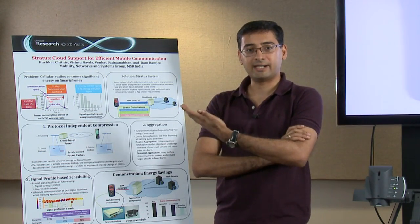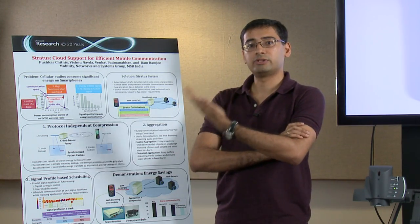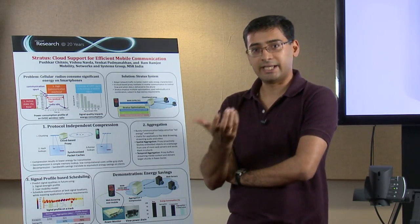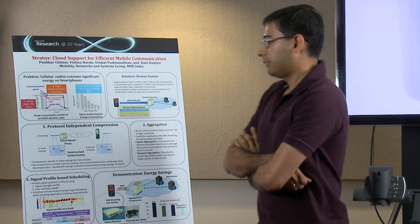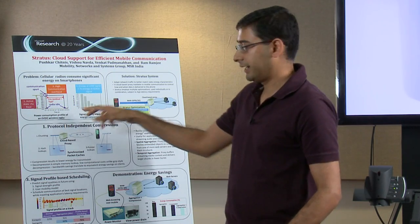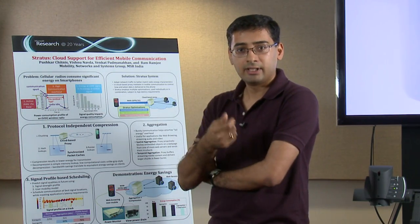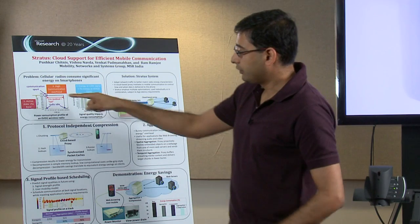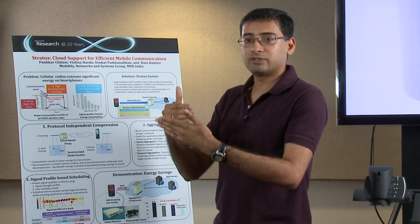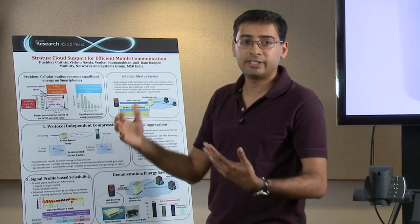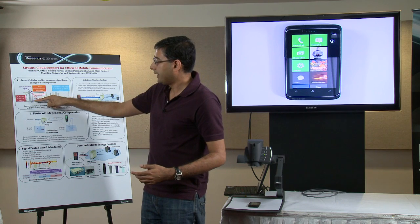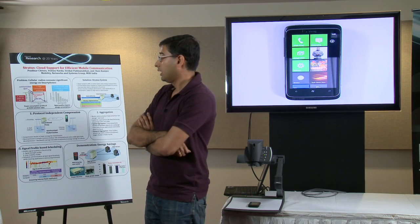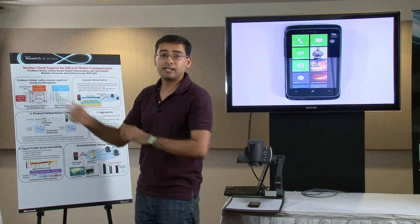Before I begin talking about Stratus, let me give a brief description of the problem setting. Here I have energy characteristics of a mobile device equipped with a 3G cellular interface — a plot of power consumed over time. In this experiment, the device started communicating briefly at the beginning. When idle, power consumed was as low as 200 mW. When communicating, the radio goes to a high-power active state at almost 1100 mW — nearly five times the base energy consumption.